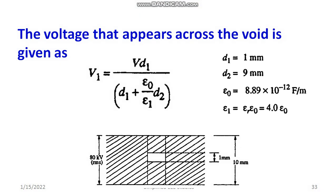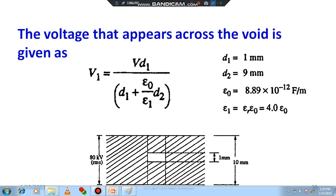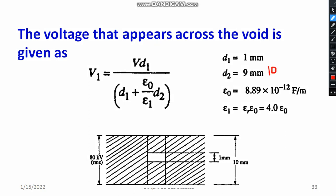Now substitute the values. D1 is the thickness of the void. D2 is the thickness of the solid dielectric material — the total thickness is 10 mm, so D2 = 10 − 1 = 9 mm. Epsilon_0, the absolute permittivity, is 8.89×10⁻¹² F/m. Epsilon_1 is the permittivity of the solid dielectric material, which equals ε_r × ε_0 = 4ε_0, since the dielectric constant given in the question is 4.